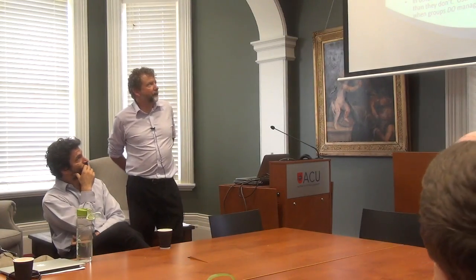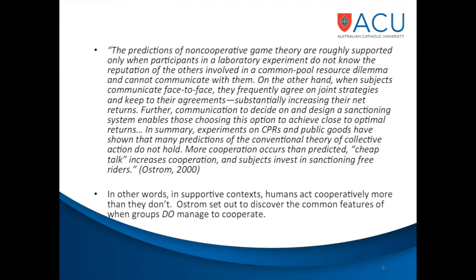Here's a quote from an article by Eleanor Ostrom from 2000 in an economics journal: 'The predictions of cooperative game theory are roughly supported only when participants in a laboratory experiment do not know the reputation of the others involved in a common pool resource dilemma and cannot communicate with them. On the other hand, when subjects communicate face to face, they frequently agree on joint strategies and keep to their agreements, substantially increasing their net returns.' More cooperation occurs than predicted, cheap talk increases cooperation, and subjects invest in sanctioning free riders. That's basically why she won the Nobel Prize — she was essentially saying that people can cooperate, as long as they can talk to one another. I found it striking to read this as a debatable claim in an economics journal; it says something about the human condition.